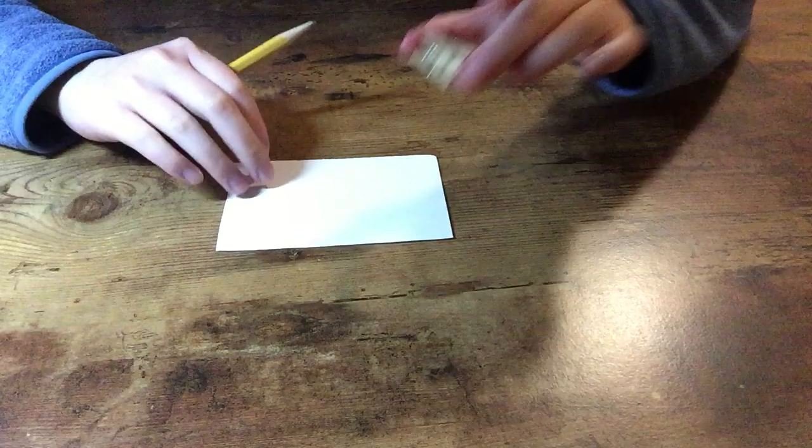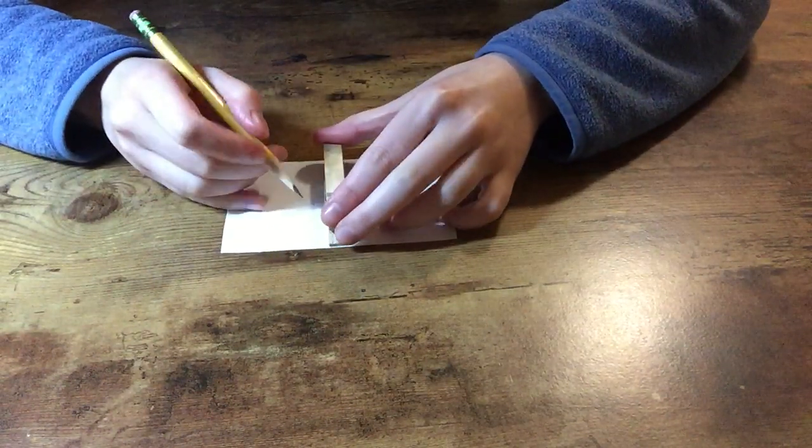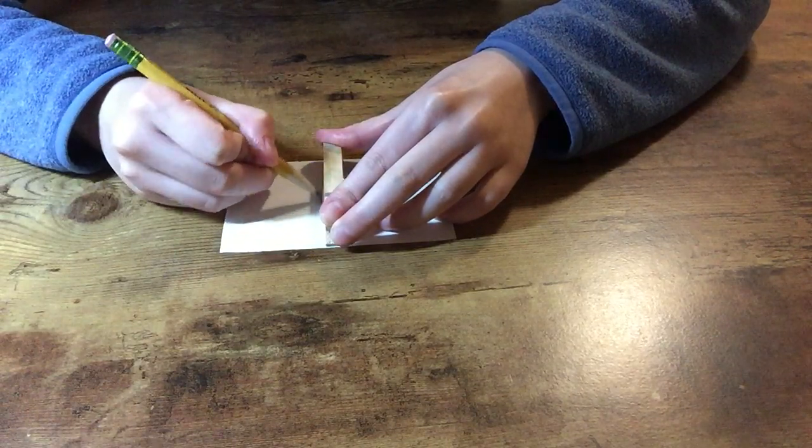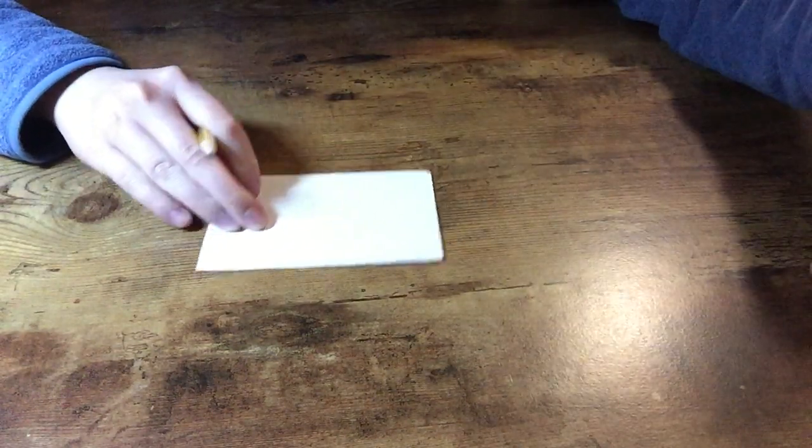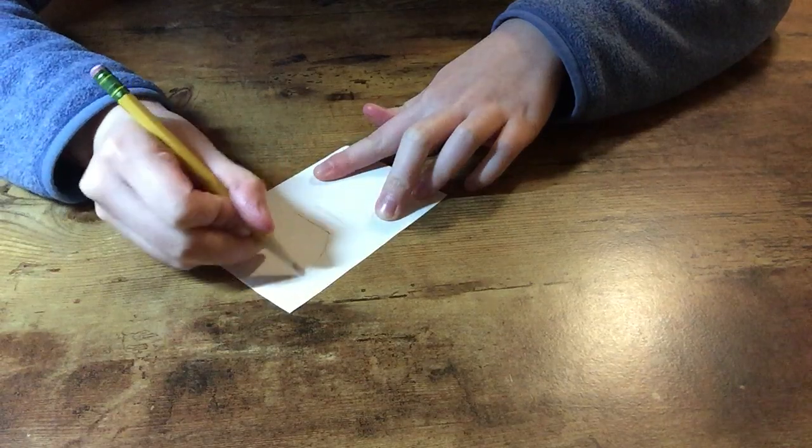So first, on the paper you want to trace about an inch, which will be the body of the dragonfly. Then you can draw out the wings.